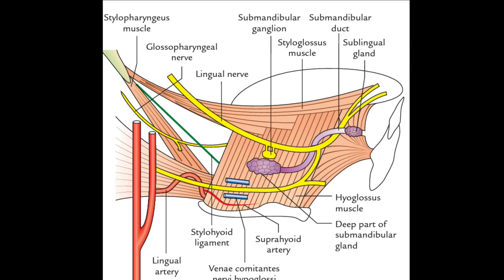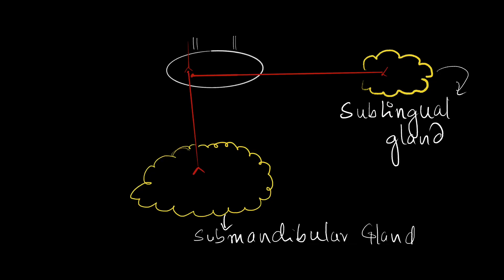The ganglion is situated on the outer aspect of the hyoglossus muscle, related to it medially. Related to the lingual nerve above, it is suspended from it via two twigs. The proximal twig is afferent to the ganglion, while the distal twig is efferent from the ganglion.